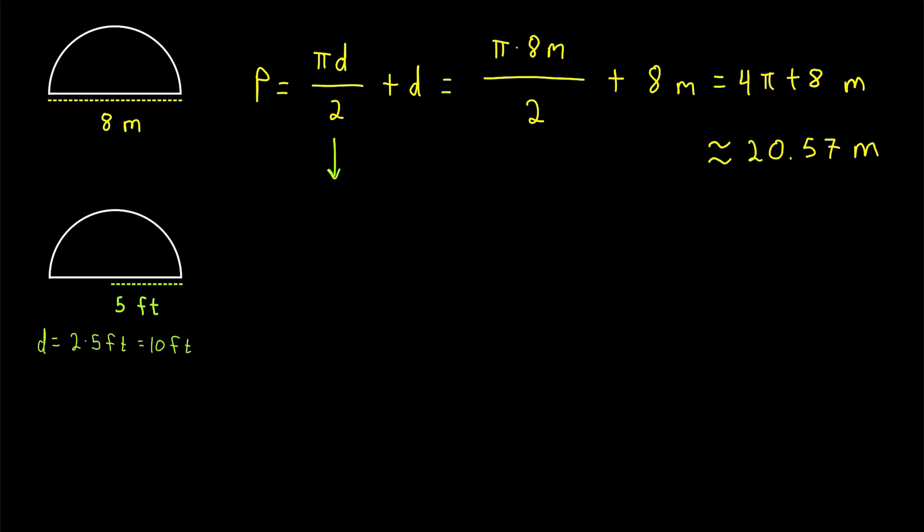Or if we wanted to, we could rewrite this formula in terms of radius, so that the perimeter of a semicircle would be pi times the diameter, which in terms of radius is 2 times the radius. So pi times 2r divided by 2 plus the diameter, which again is 2 times the radius. That's actually kind of nice, because then these 2s cancel out. So we're just left with pi times r plus 2r.